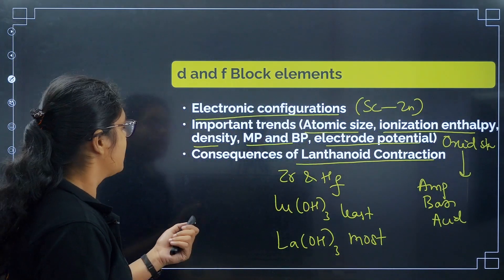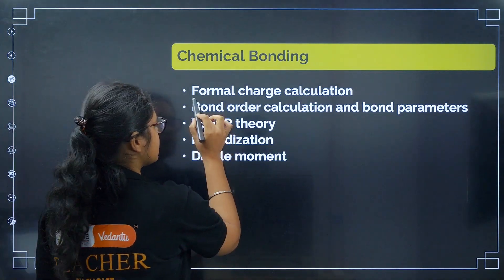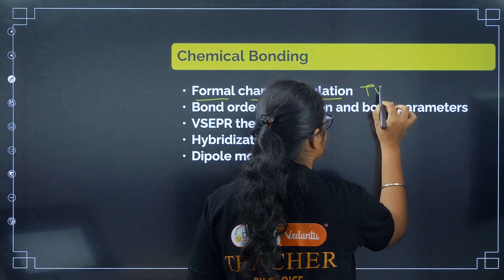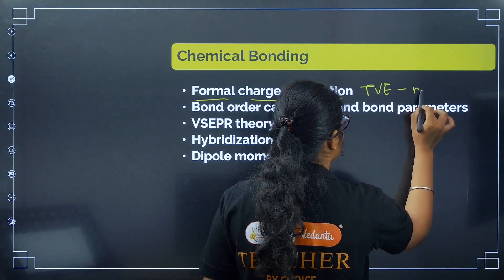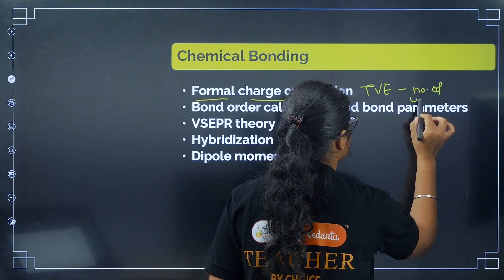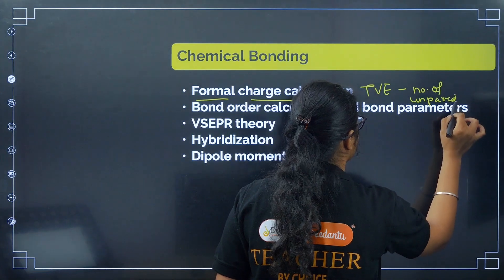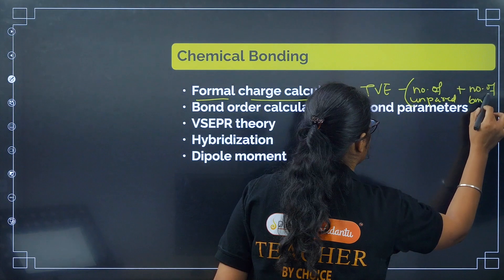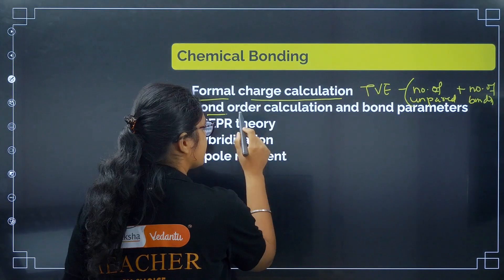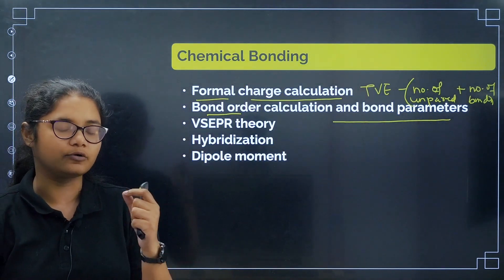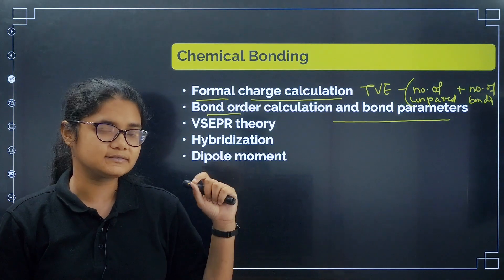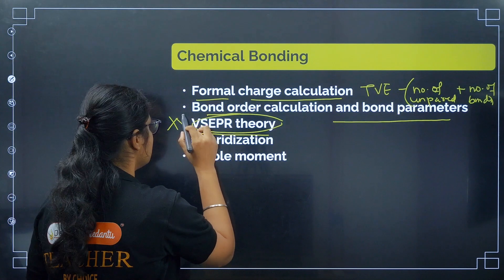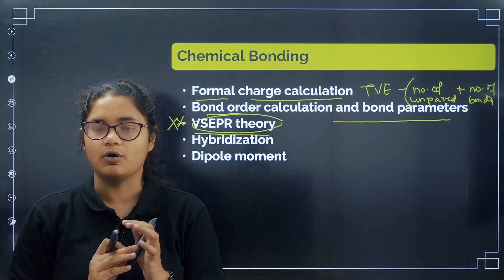In Chemical Bonding, focus on formal charge calculation — the formula is: total valence electrons minus number of non-bonding electrons minus half the number of bonding electrons. Formal charge calculation is important. Then cover bond order calculation and bond parameters — practice questions from here using the trick for bond order calculation.